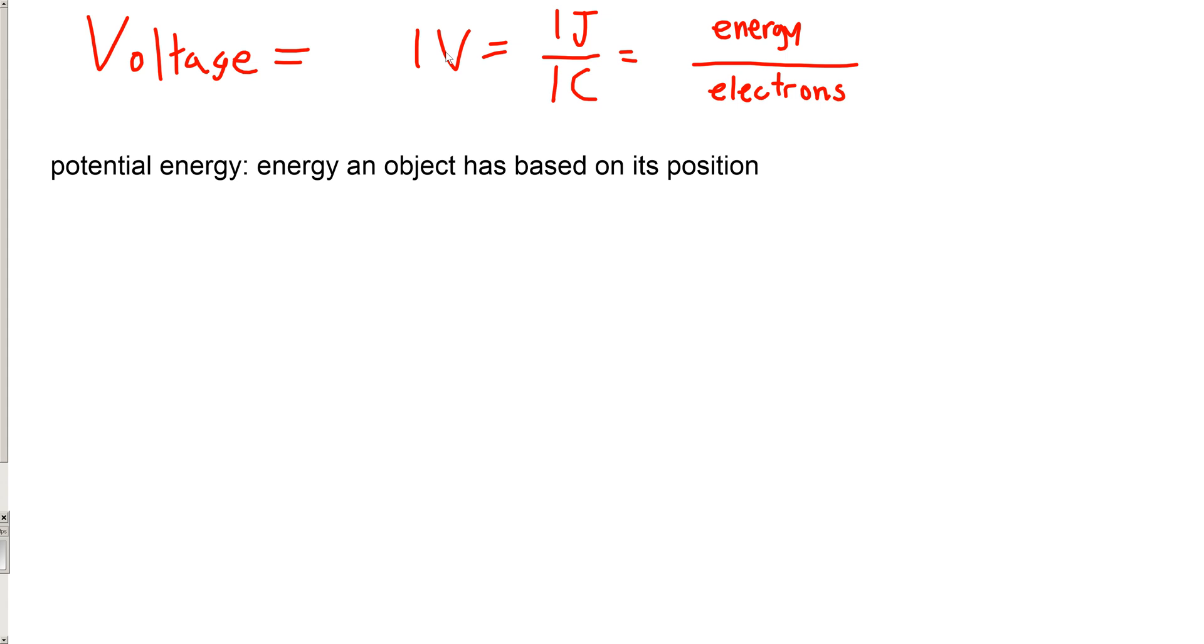At the same time there's another substance in there, a certain ion or a certain polymer, that wants to take those electrons. So the electrons go from the electron giver to the electron taker. How badly they want to go from one place to another is voltage.